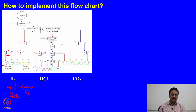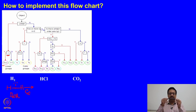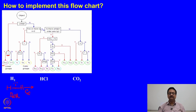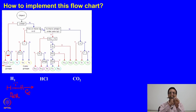In our previous class, we learned how the D comes here. If you have a C∞ axis, you have an infinite number of perpendicular C₂'s about this C∞ axis. Those infinite perpendicular C₂'s make it D∞, and the plane perpendicular to the principal axis is your σh, and that σh makes it D∞h. This molecule has an inversion center.